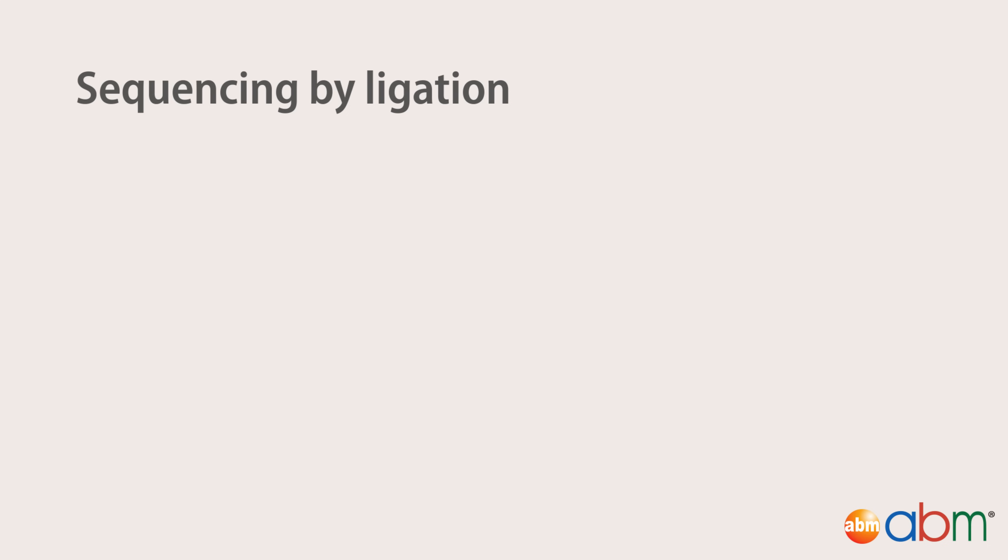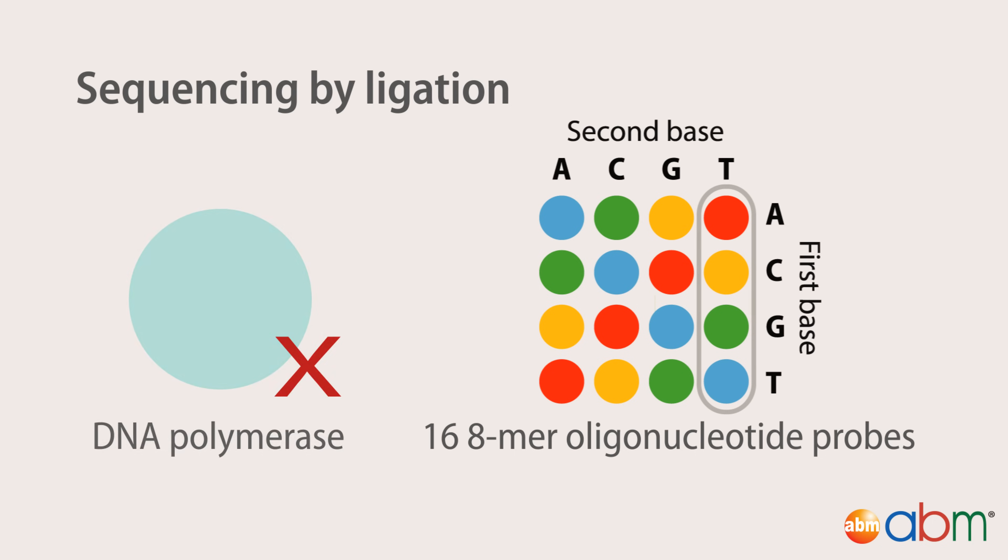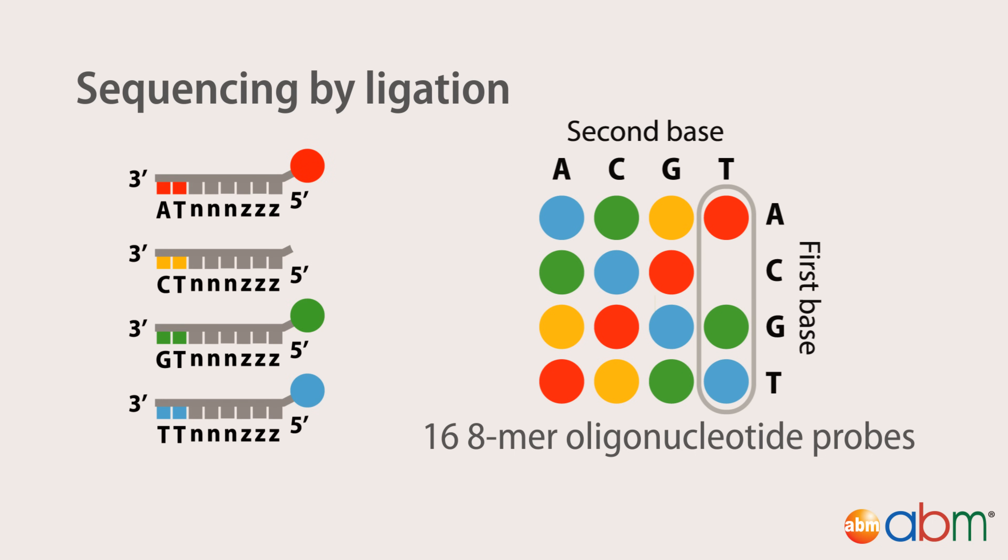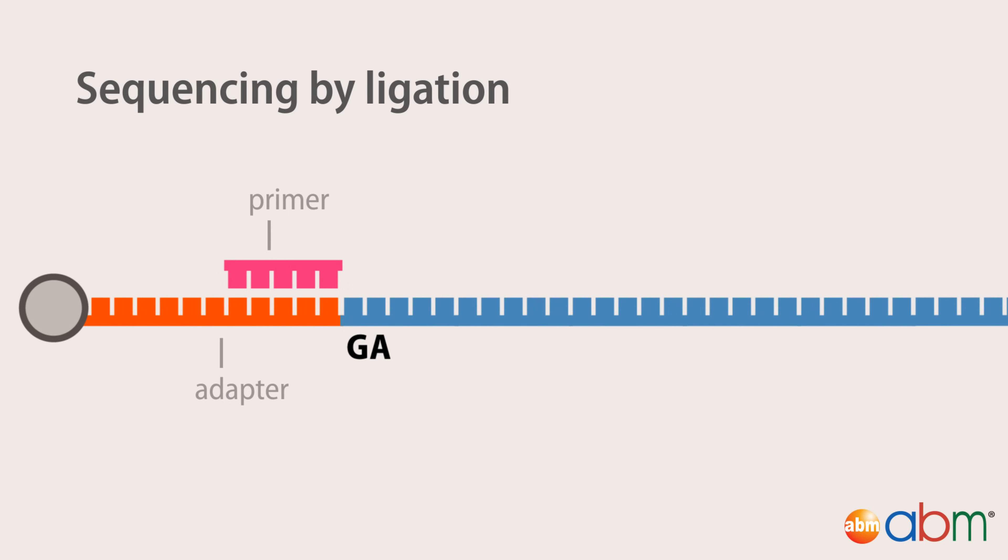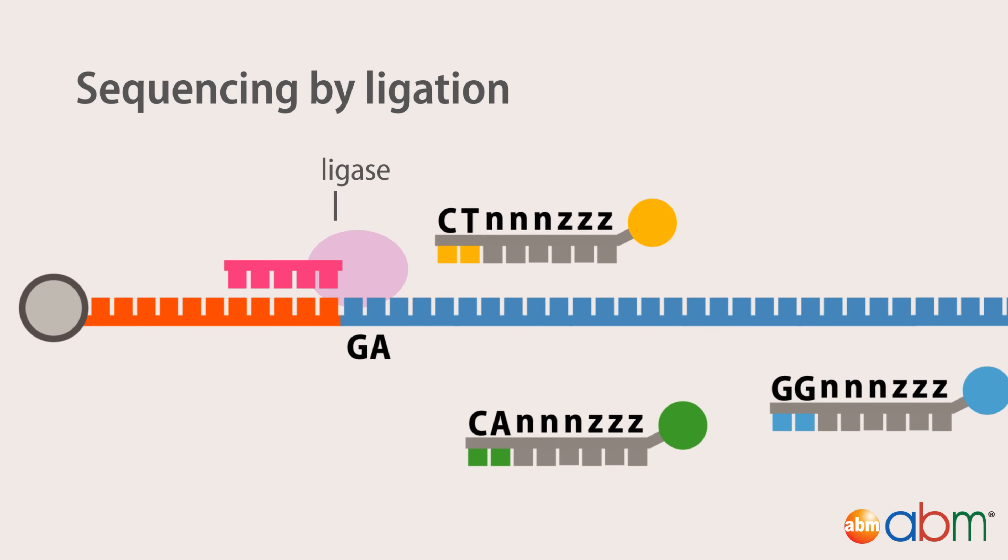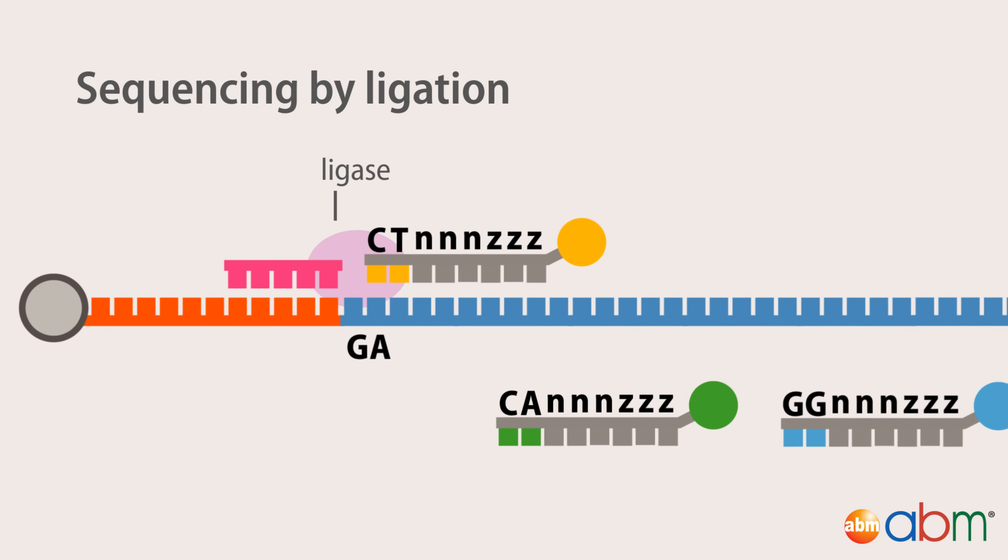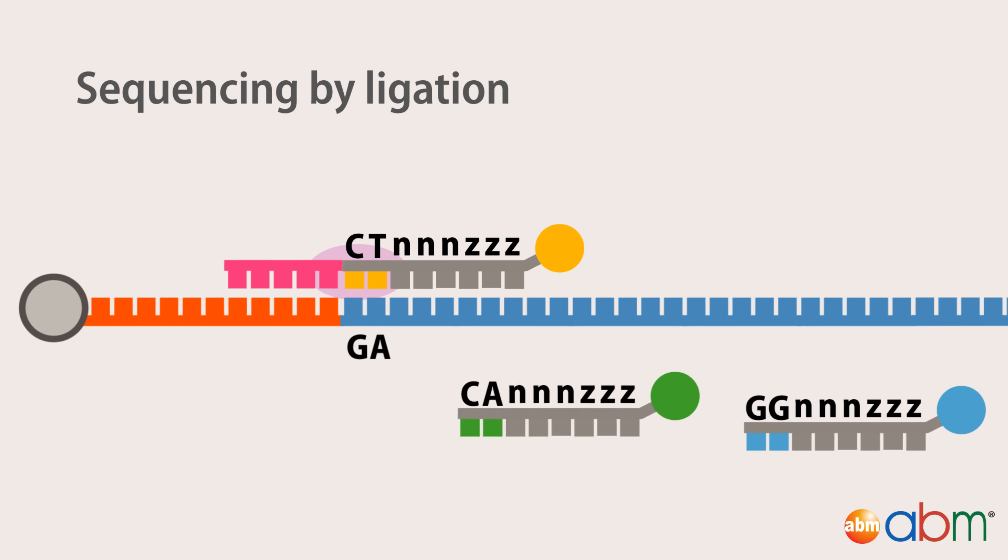Sequencing by ligation is different from the other two methods, since it does not utilize a DNA polymerase to incorporate nucleotides. Instead, it relies on 16 octamer oligonucleotide probes, each with one of four fluorescent dyes attached to its 5' end that are ligated to one another. Each octamer consists of two probe-specific bases, and six degenerate bases. The sequencing reaction commences by binding of the primer to the adapter sequence, and then hybridization of the appropriate probe. This hybridization of the probe is guided by the two probe-specific bases, and upon annealing, is ligated to the primer sequence through a DNA ligase. Unbound oligonucleotides are washed away, then the signal is detected and recorded.